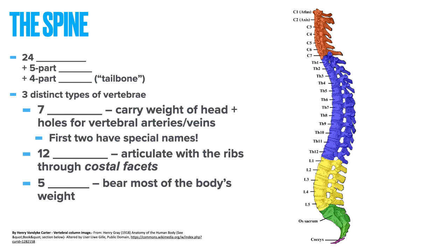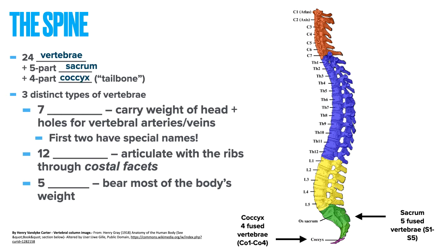Now let's move on to the spine. The vertebrae in the human are divided into different regions. There are 24 vertebrae, a five-part sacrum, and a four-part coccyx — these are fused and we refer to it as the tailbone. There are three distinct types of vertebrae. We have seven cervical vertebrae, which carry the weight of the head and contain holes where vertebral arteries and veins pass through. The first two cervical vertebrae, C1 and C2, have specific names: the atlas and the axis.